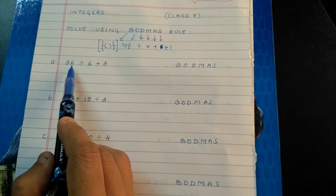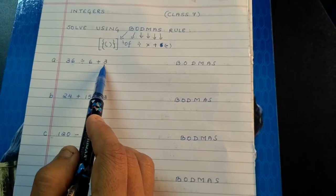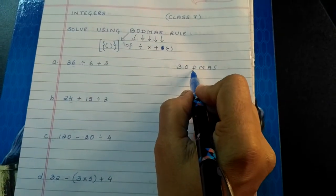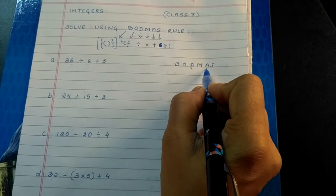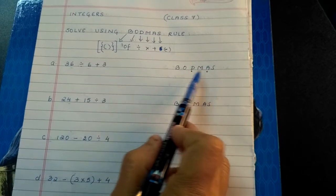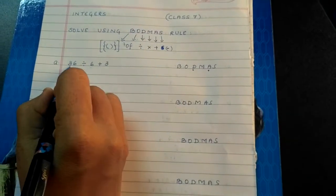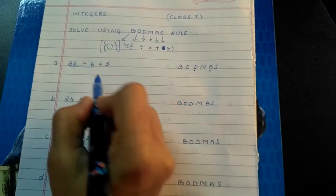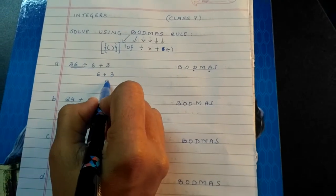So now in this sum 36 divided by 6 plus 3. So what is here? Division is there and then addition is there. But what comes first? D, division. So first we have to do division. 36 divided by 6 is 6. 6 plus 3 is 9.